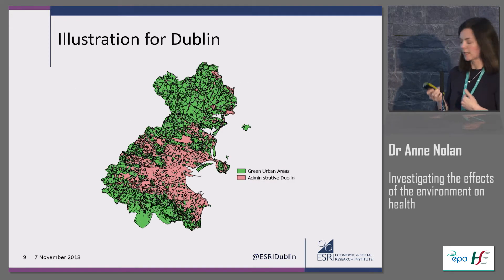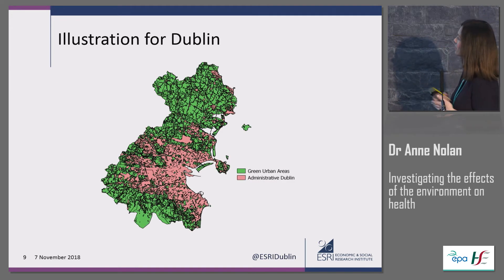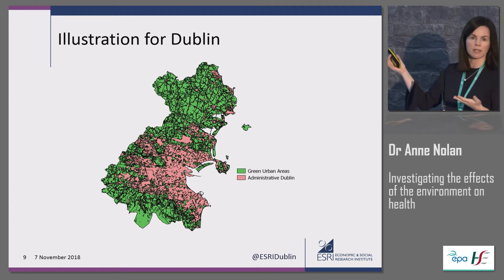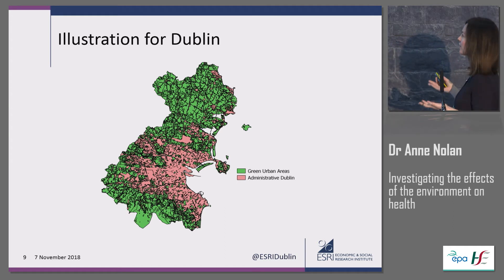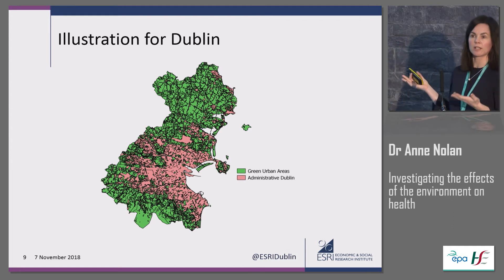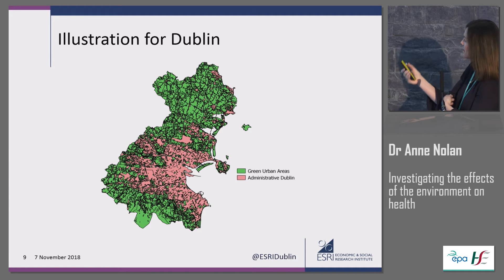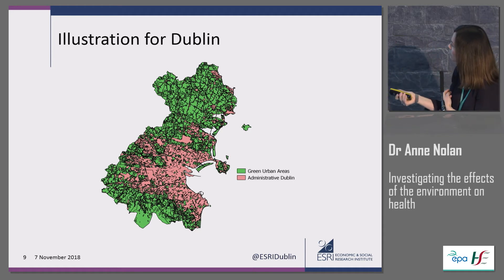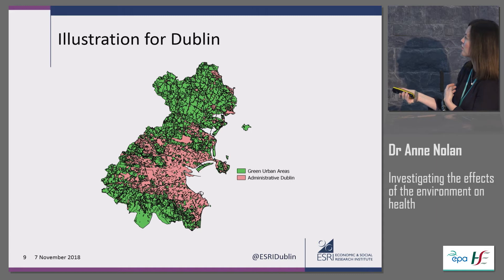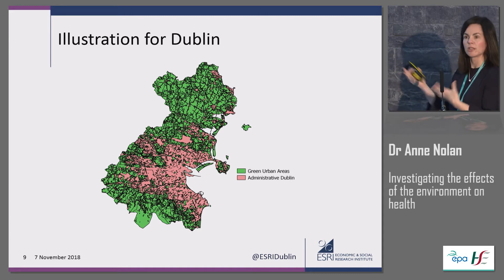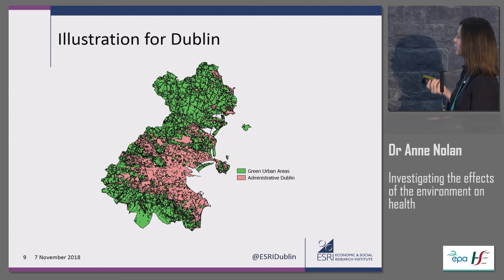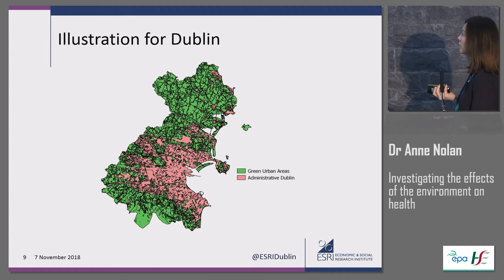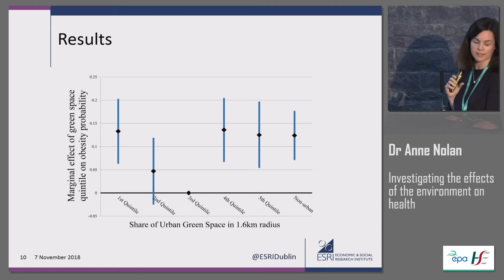This is what it looks like for Dublin. Even within the Dublin city and county area there's still quite a lot of green space — you can see the Phoenix Park, for example, and Dublin Airport. There's quite a lot of variation that we can leverage in terms of green space exposure, and we've done that for the other four urban areas as well.